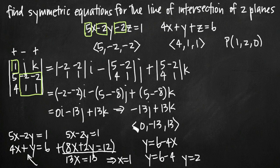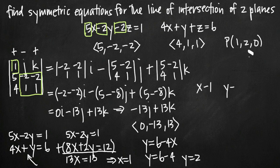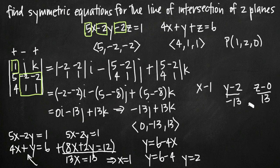Now that we have the point (1, 2, 0) and the direction vector (0, -13, 13), writing the symmetric equations is straightforward. For each variable, we subtract the corresponding coordinate from the point and divide by the corresponding component of the direction vector. For x, the direction number is 0, so we cannot divide by it — we leave it as x minus 1. For y, we get (y minus 2) divided by negative 13. For z, we get (z minus 0) divided by 13. We then set the non-zero parts equal to one another.